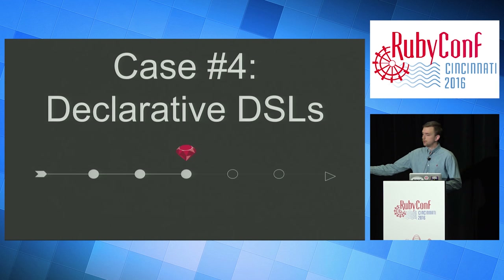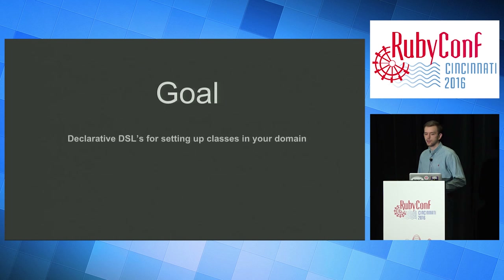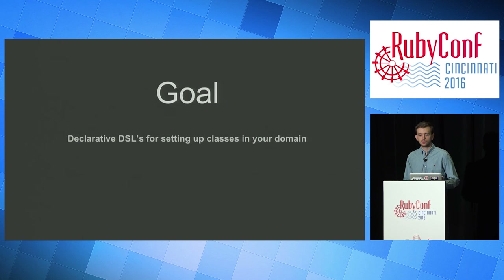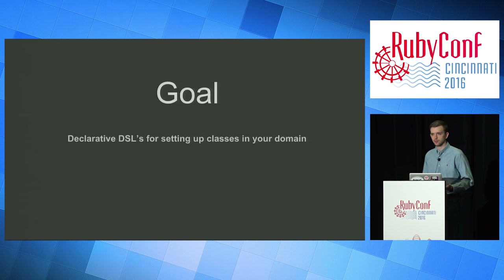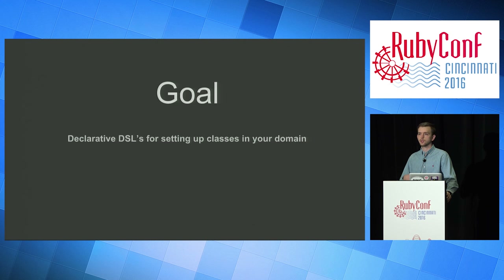Case number four is declarative DSLs. Our goal is declarative DSLs for setting up classes in your domain. It's going to look like normal Ruby, and it should — we use these every day: attr_accessor, attr_reader, attr_writer. It feels like it's part of the Ruby language, but it's not — it's just a method. It just feels that way because it fits so well within the domain of the problem you're trying to solve.